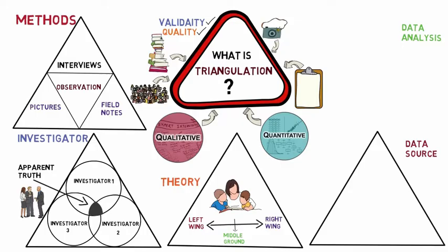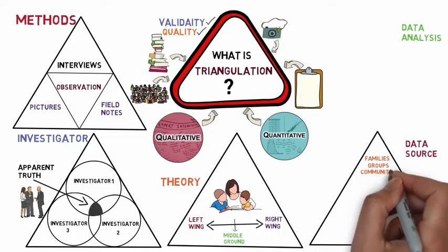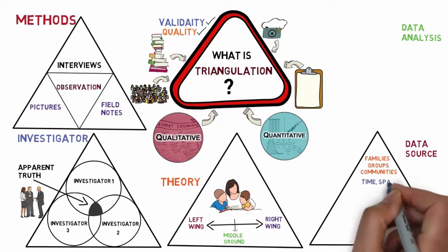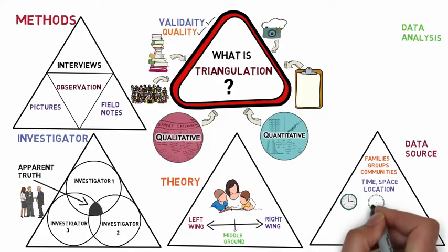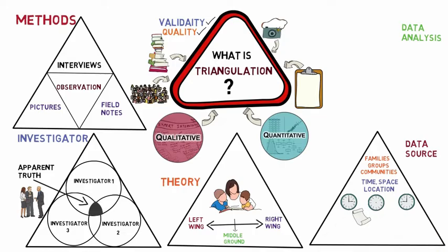The next type is data source triangulation, which involves the collection of data from different types of people including families, groups, and communities to get multiple perspectives of the same phenomenon. It also considers aspects of time and space or location while analyzing data, such as data collected at different timings or from different locations to confirm the findings.